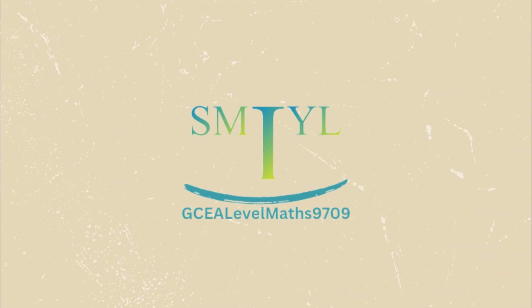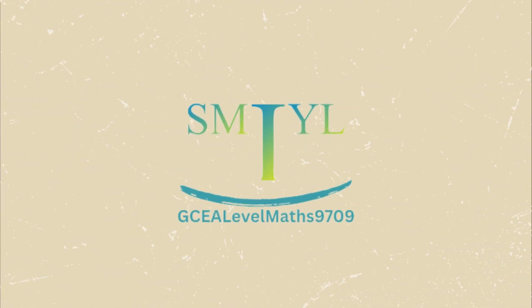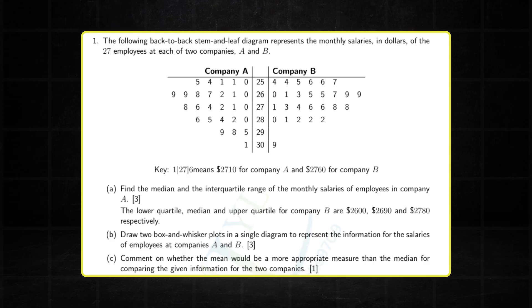Question number one is a representation of data question. I've chosen to put a stem and leaf diagram because in the 2023 May-June series, two of the three papers had a stem and leaf diagram.